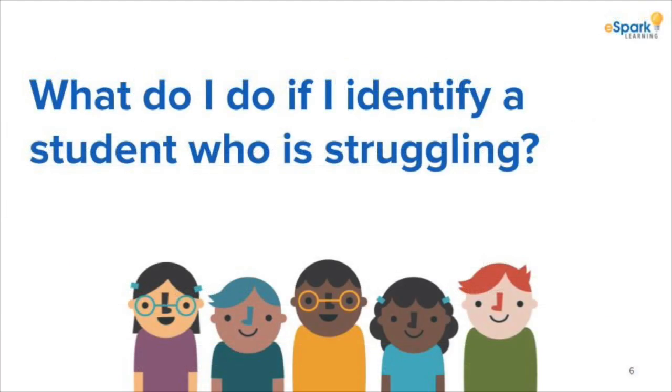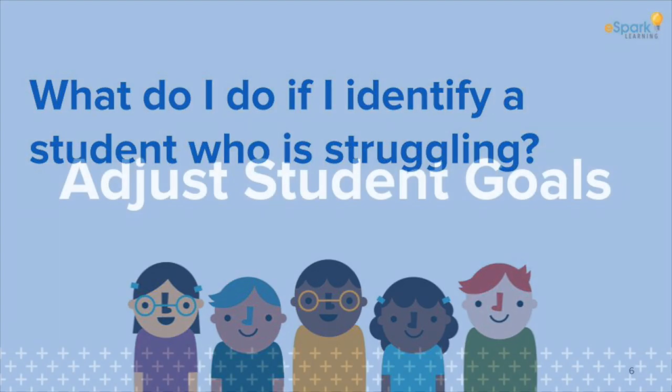A student needs to score an 80% or higher on his or her quest for it to be considered mastered. If the student's score is well below this, it could be a sign that the student is struggling and you may need to intervene. So you know who is struggling — now what? There are a couple of different ways you can intervene depending on the situation.